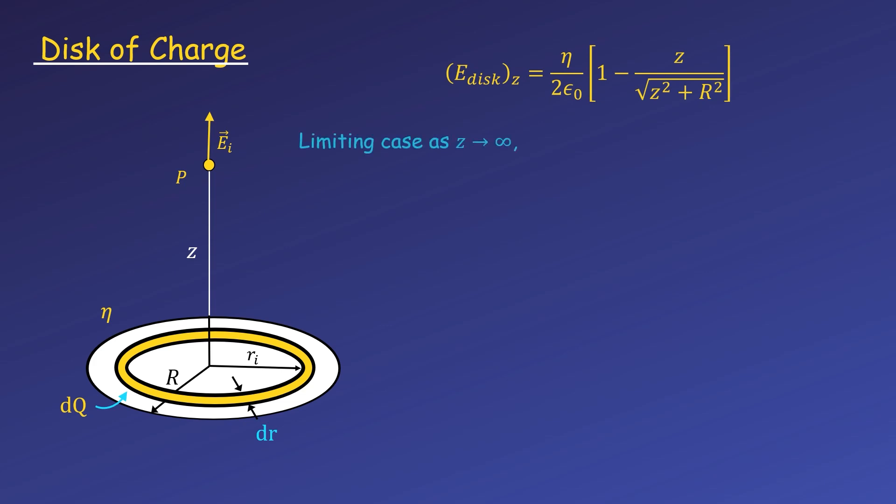We can also look at the field far above the disk. As usual, we need to rewrite our expression, and we can rewrite our term in brackets by factoring out a z² from the radical. It comes out of the radical as just z, since the square root of z² is just z, and cancels our z from the numerator. Now we can use a binomial approximation.